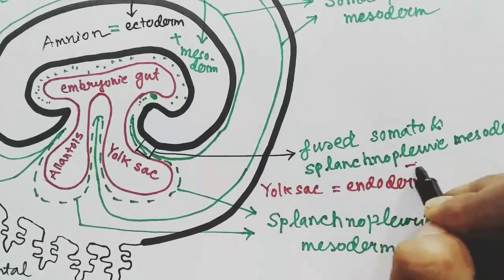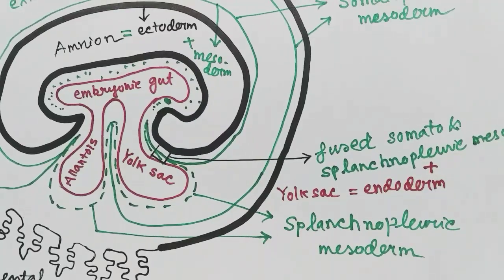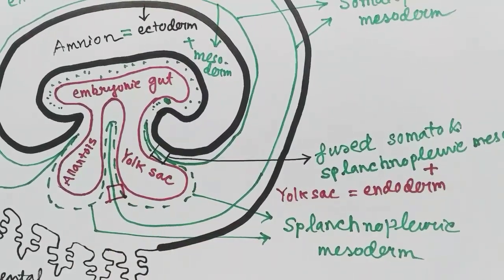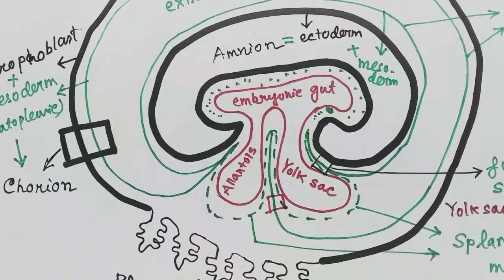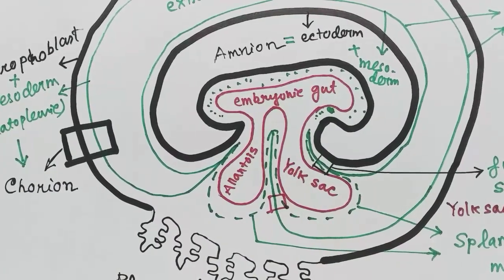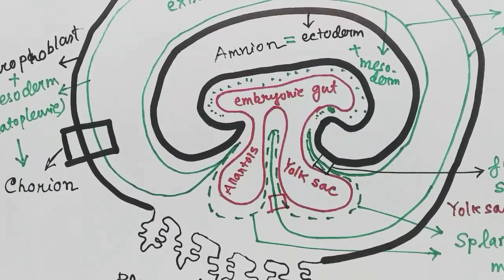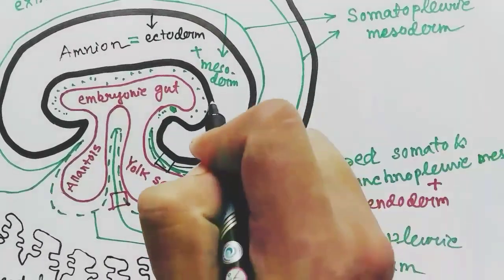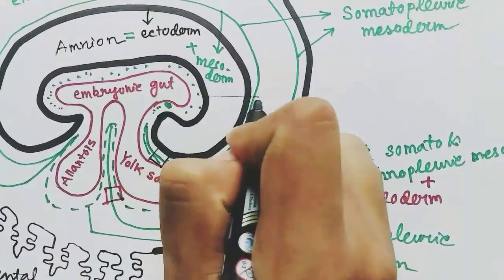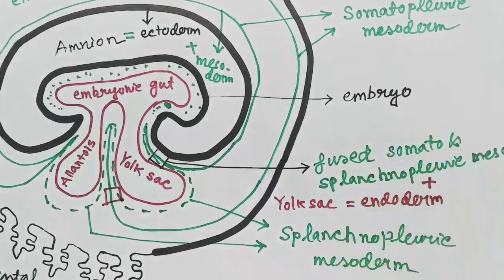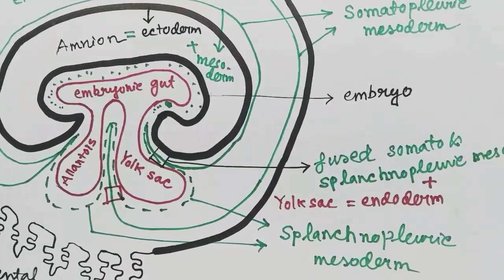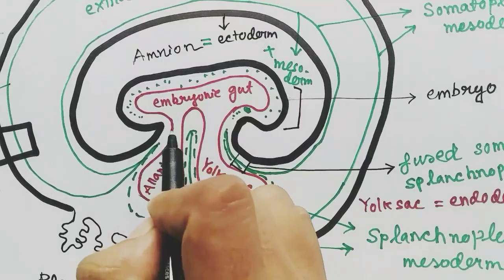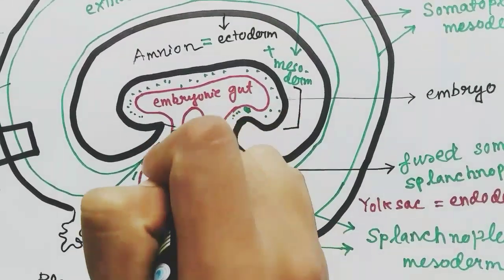The allantois has endoderm and splanchnopleuric mesoderm. This is the embryo protected by the extra-embryonic membranes, and this region is the umbilical cord.